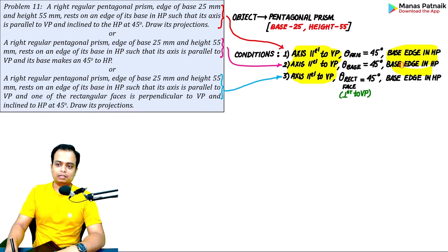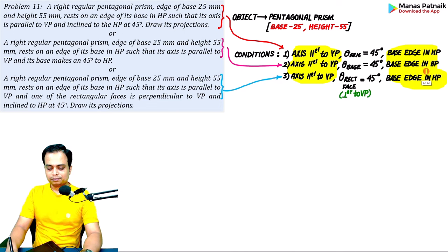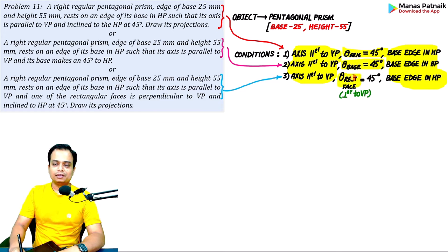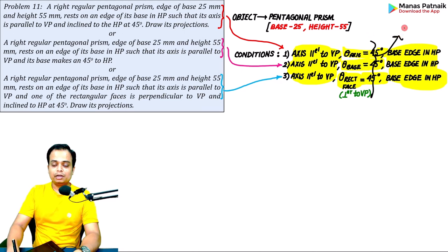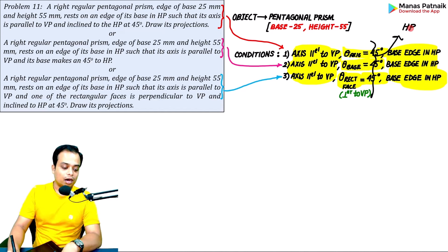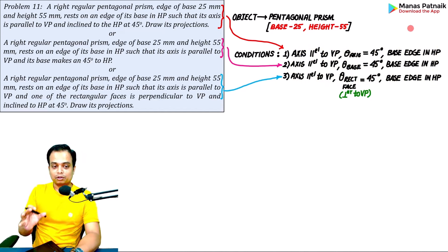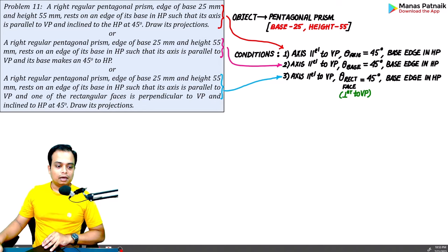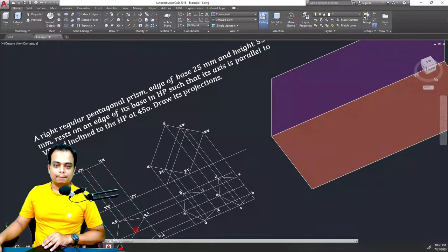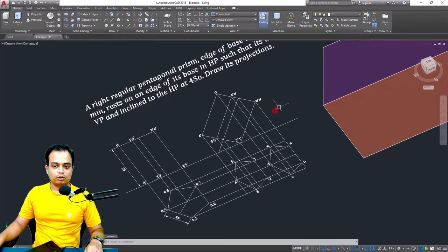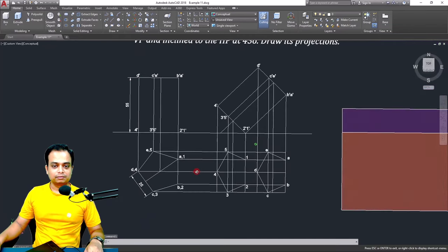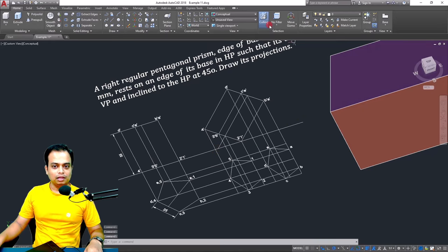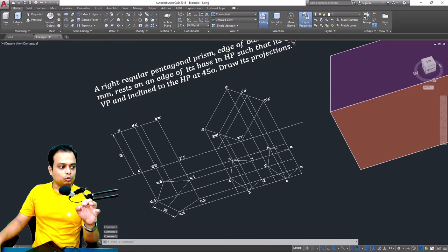What is common across all three descriptions is the inclination with the HP — somewhere axis inclination is given, somewhere base inclination, and somewhere the inclination of the rectangular face. Now let us look at AutoCAD to see what your final drawing is going to look like. I'll give you a step-by-step approach, but first let us look at it from a 3D aspect. Position number one is going to be something like this.